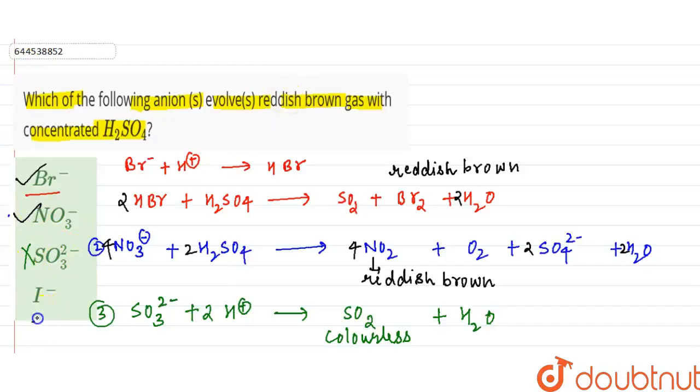When we go for fourth option I minus ion, when I minus ion reacts with sulfuric acid, it gives us I3 minus ion and SO4 2 minus ion, water, and SO2.